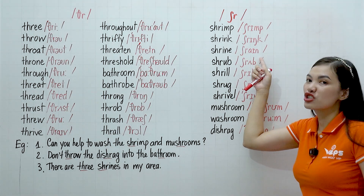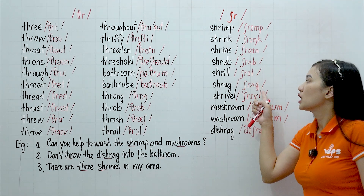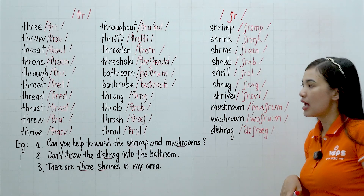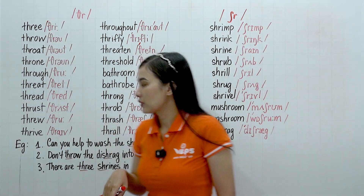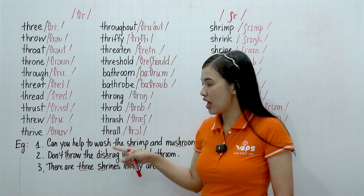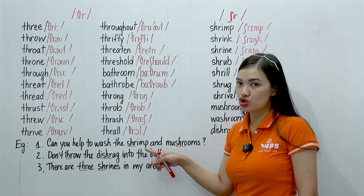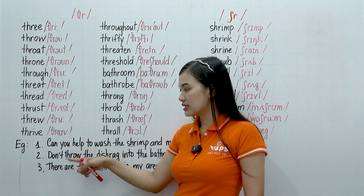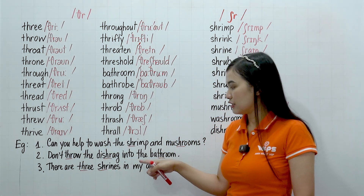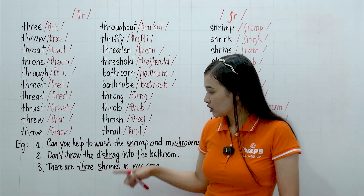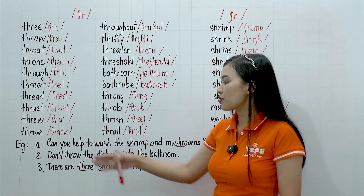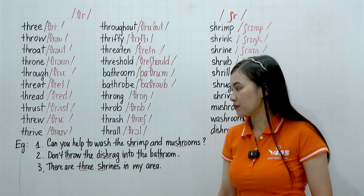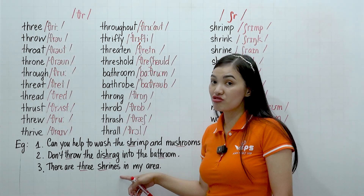So one more time we have: shrimp, shrink, shrine, shrub, shrill, shrug, shrivel, mushroom, washroom, and dish rack. Now let's go to the examples. For number one: 'Can you help to wash the shrimp and mushrooms?' Number two: 'Don't throw the dish rack into the bathroom.' Number three: 'There are three shrines in my area.'